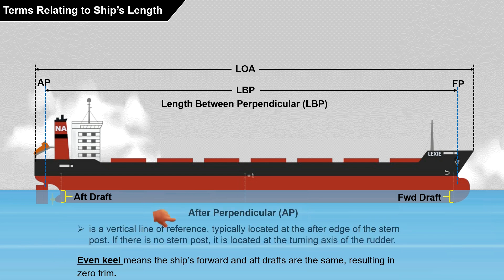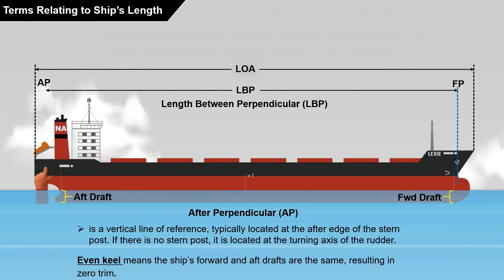The aft perpendicular is a vertical line of reference, typically located at the aft edge of the stern post. If there is no stern post, it is situated in the turning axis of the rudder. In this illustration, the aft perpendicular is located in the turning axis of the rudder, so this line serves as the reference point for the aft perpendicular.